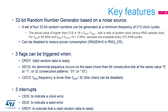The RNG peripheral is based on continuous analog noise that provides a random 32-bit value, which will be explained in detail later on. The RNG is able to generate four 32-bit random numbers at a minimum frequency of 213 system clock cycles. The rule of thumb is: the lower the RNG clock, the better the entropy for the sampled random source.